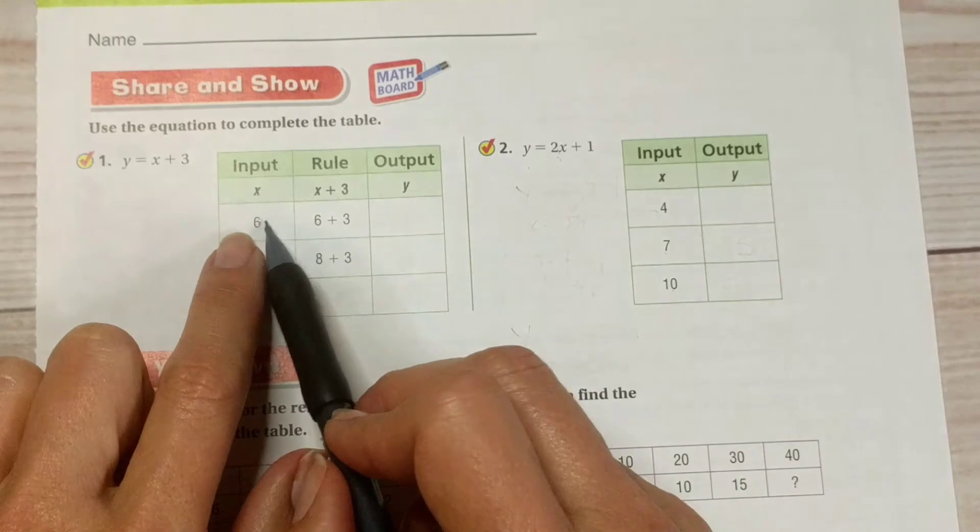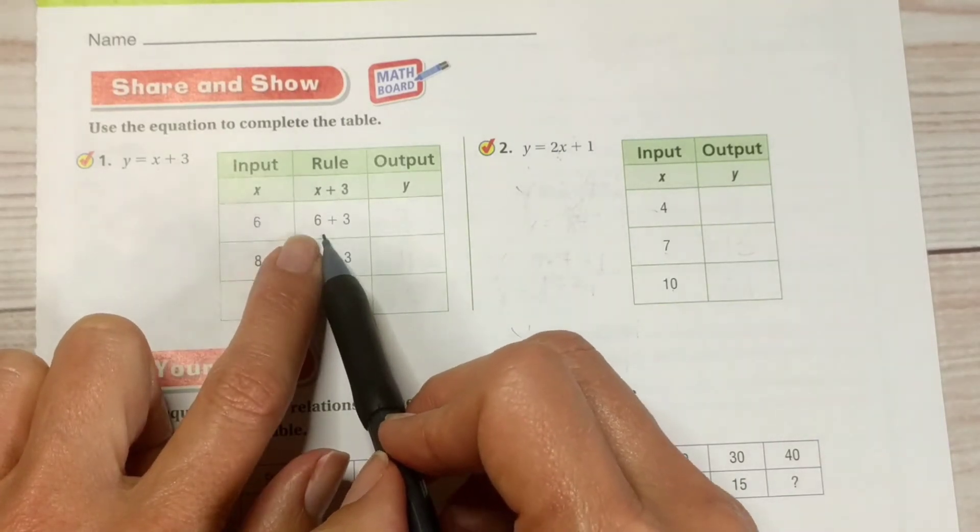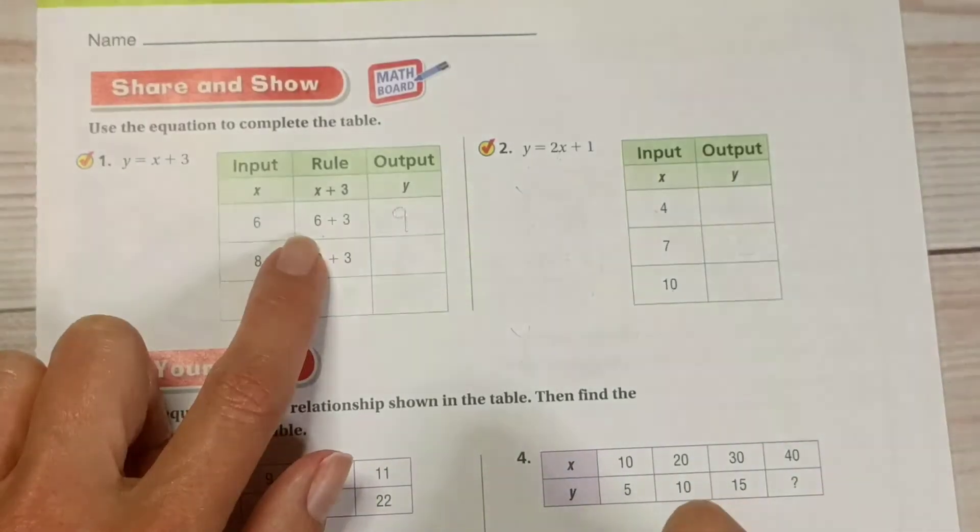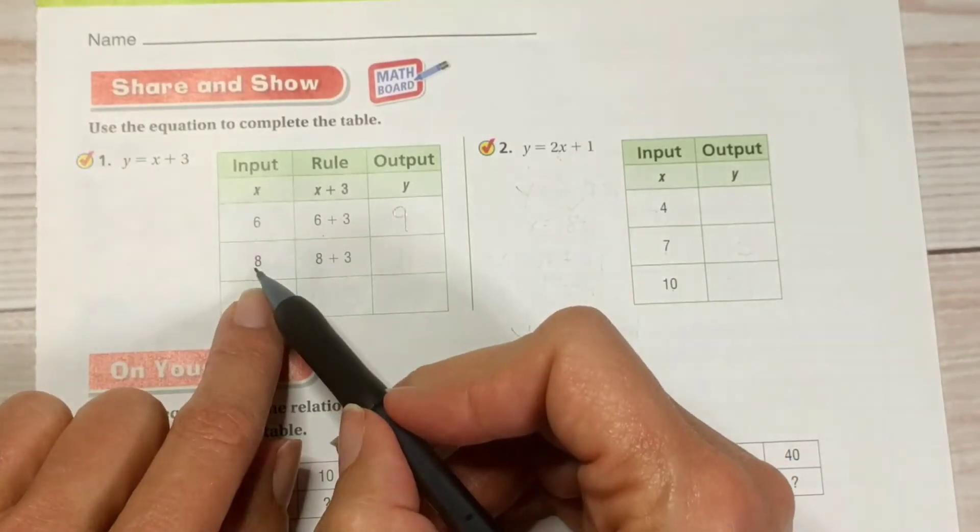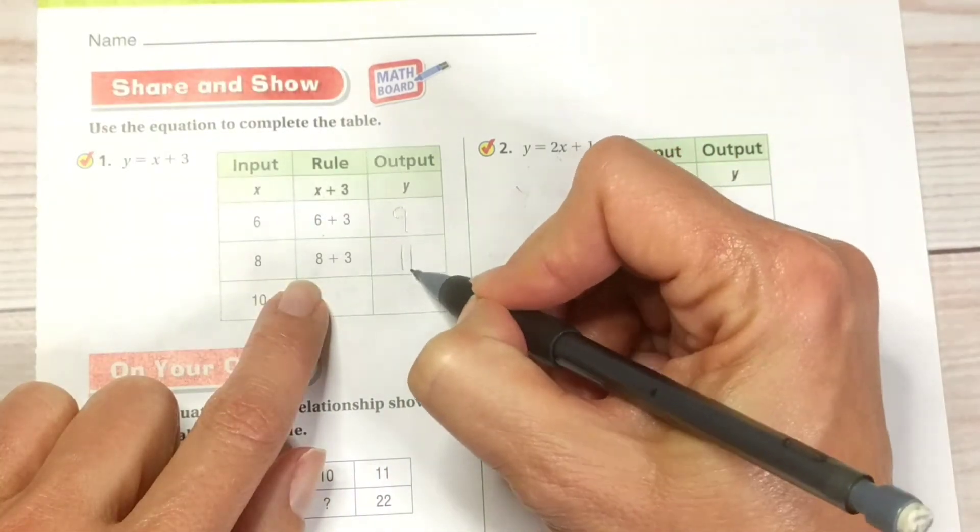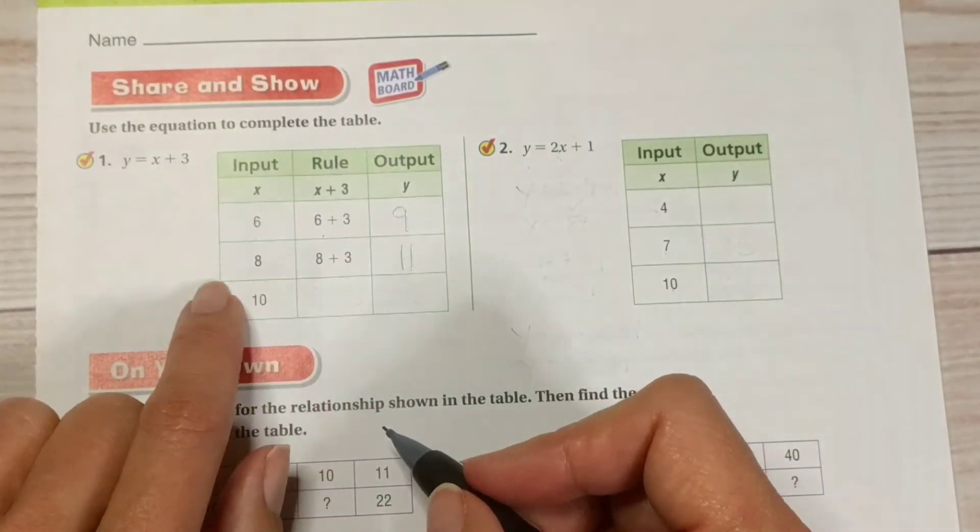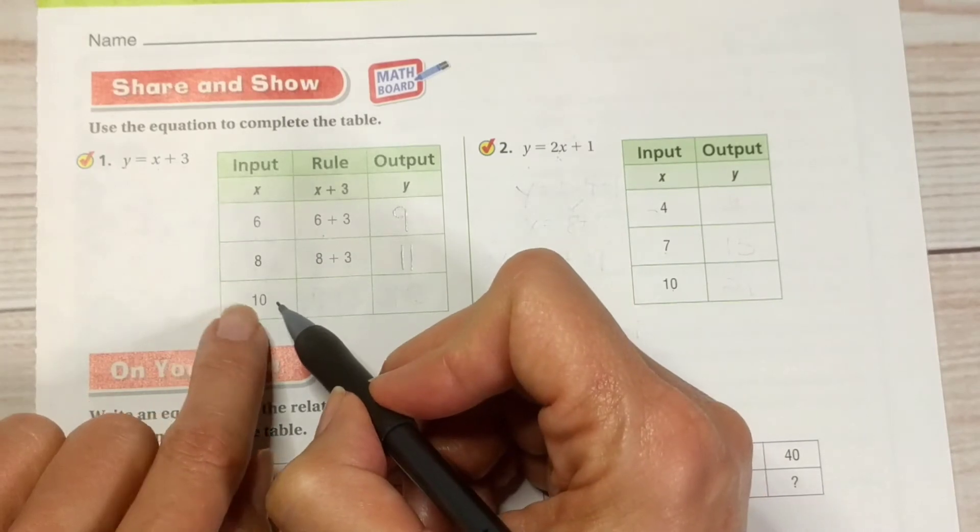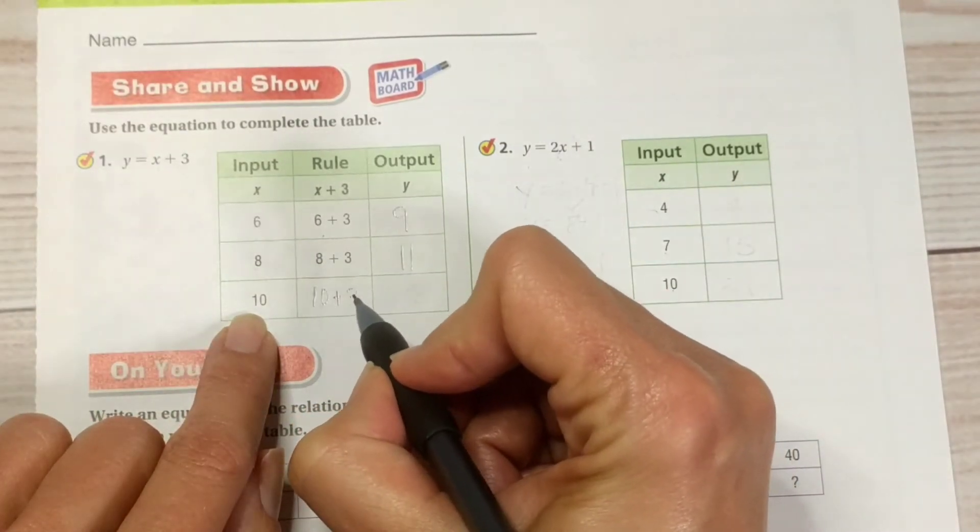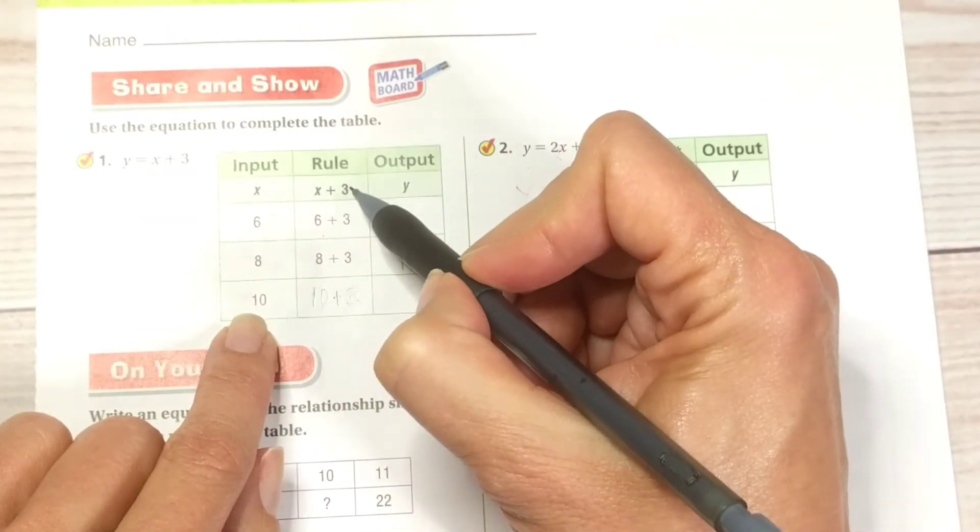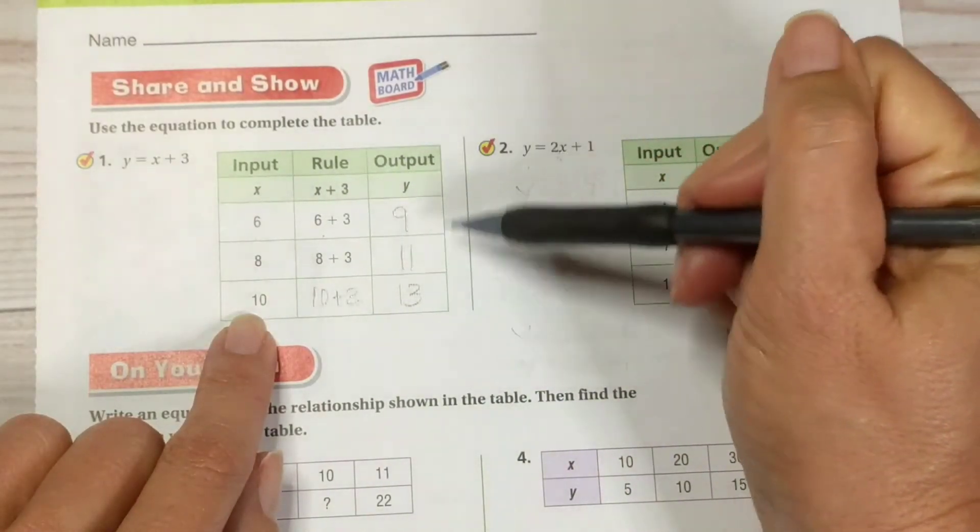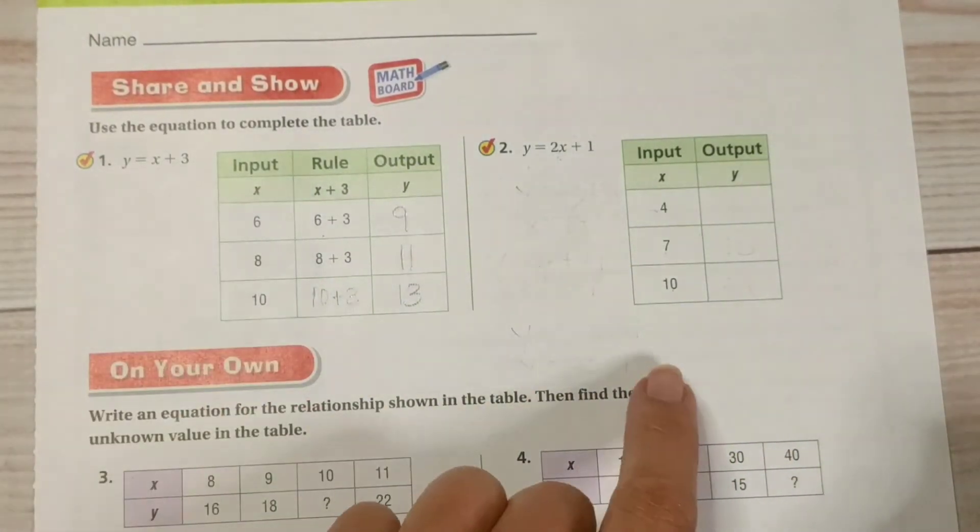So, 6, when we substitute that in for X, 6 plus 3 gives us an output of 9. When we substitute the value 8 in for X, 8 plus 3 equals 11. When we substitute the value 10 in for X, we have 10 plus 3, which equals 13. Those are our output values or our Y values.